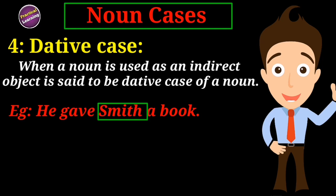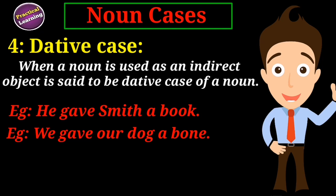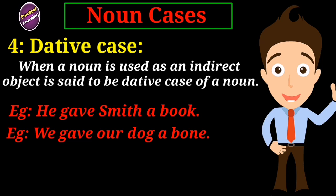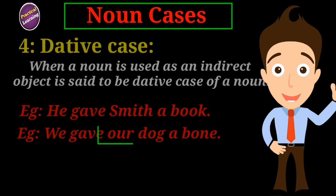Another example: 'We gave our dog a boon.' Asking 'what was given?' gives us 'a boon,' so a boon is the direct object. Asking 'who was given a boon?' gives us 'our dog,' so our dog is the indirect object and therefore the dative case of a noun.